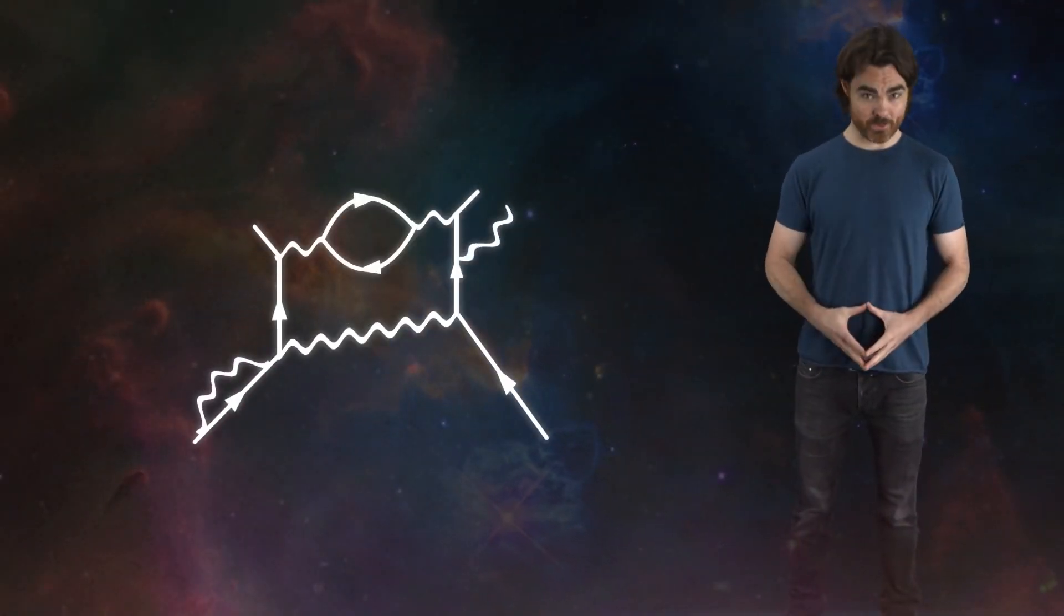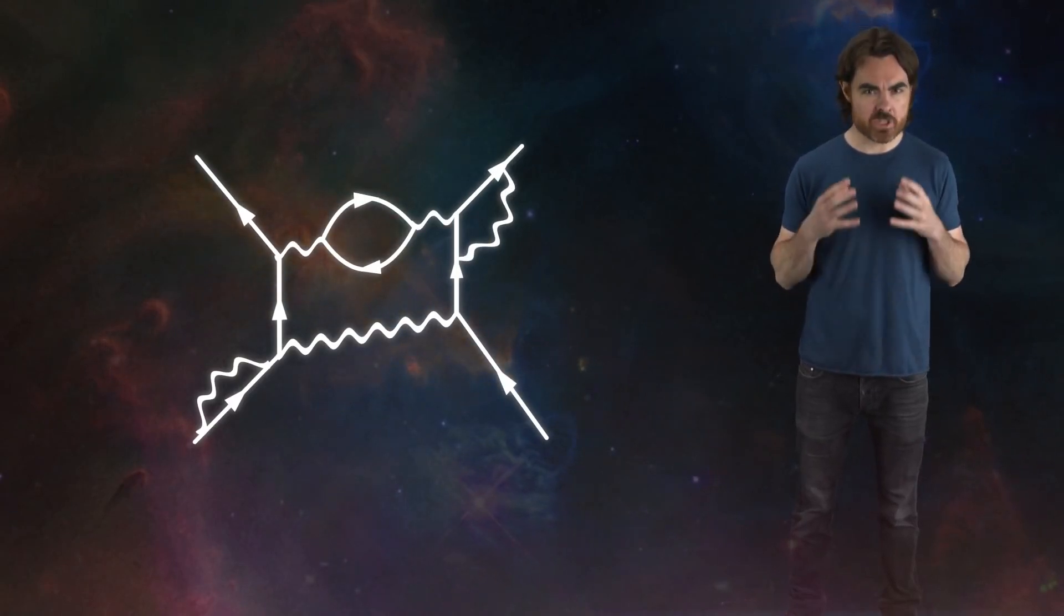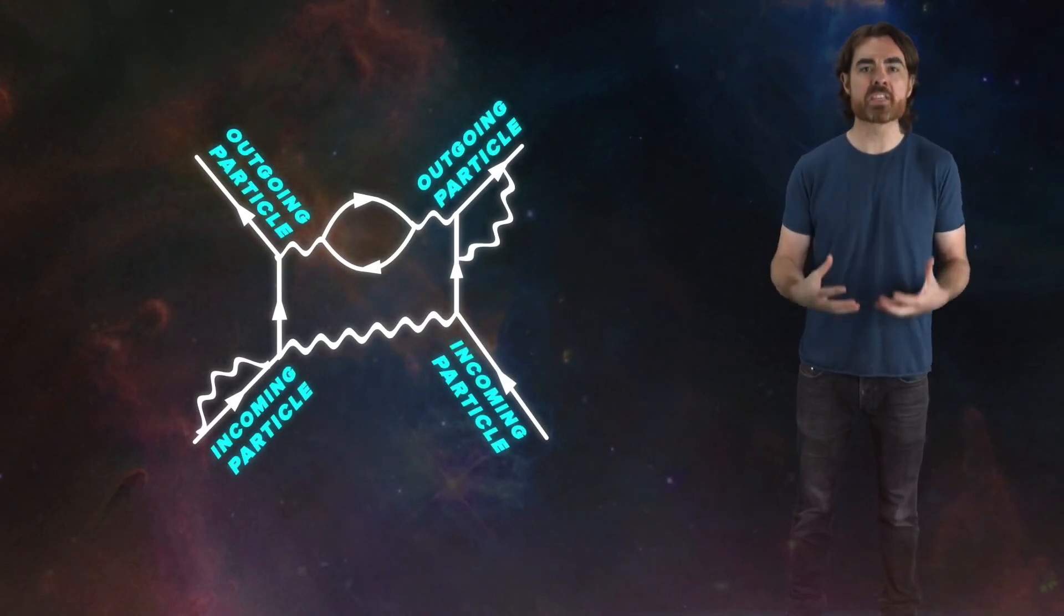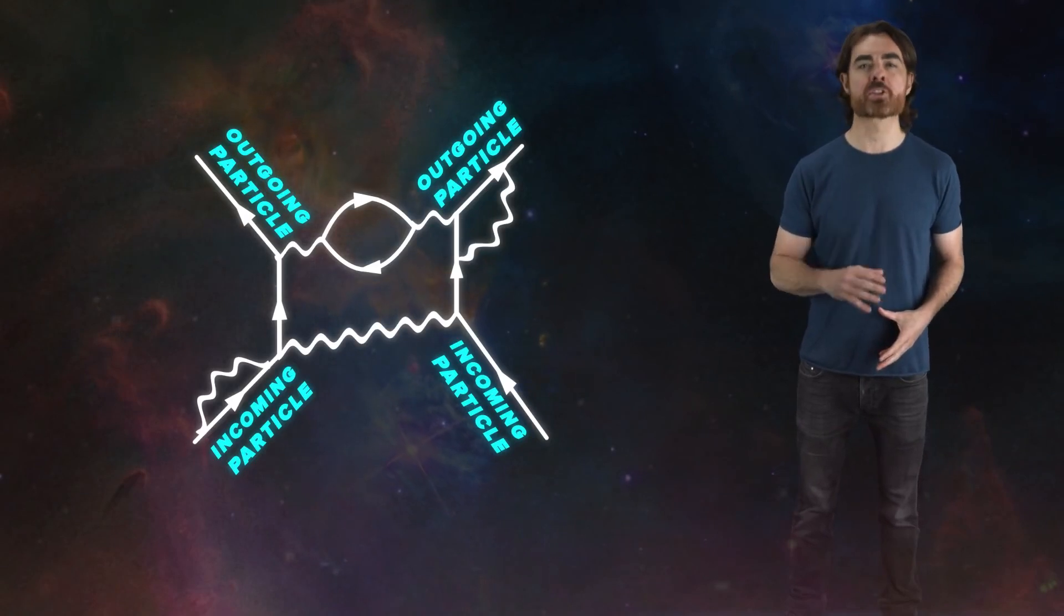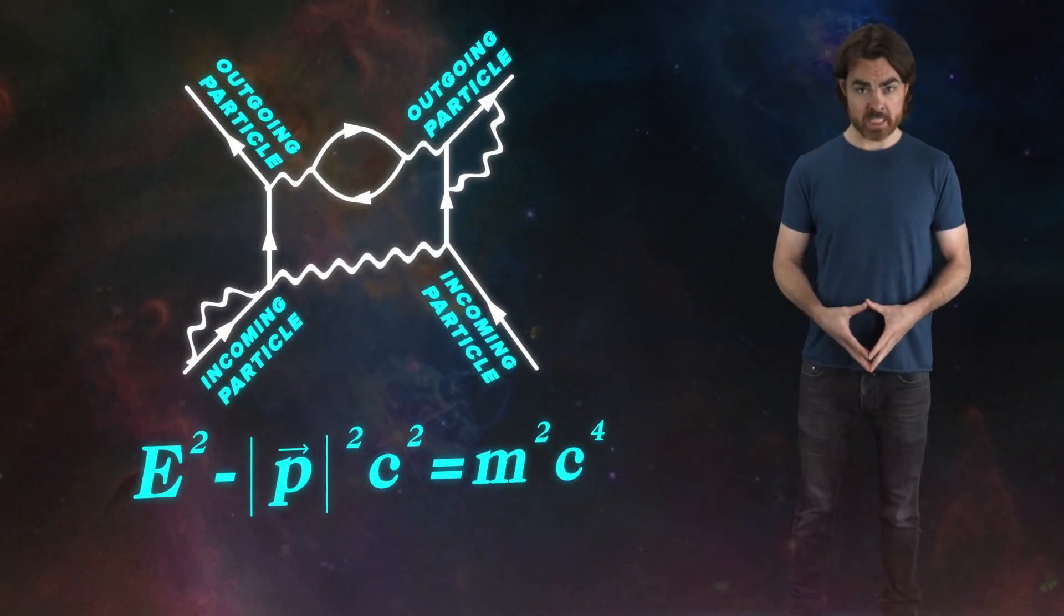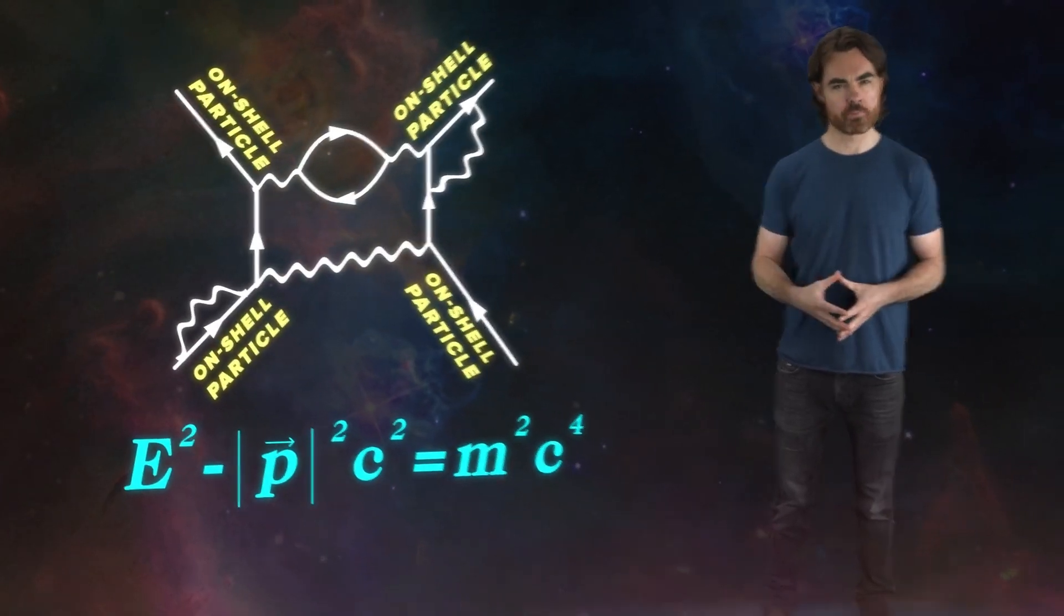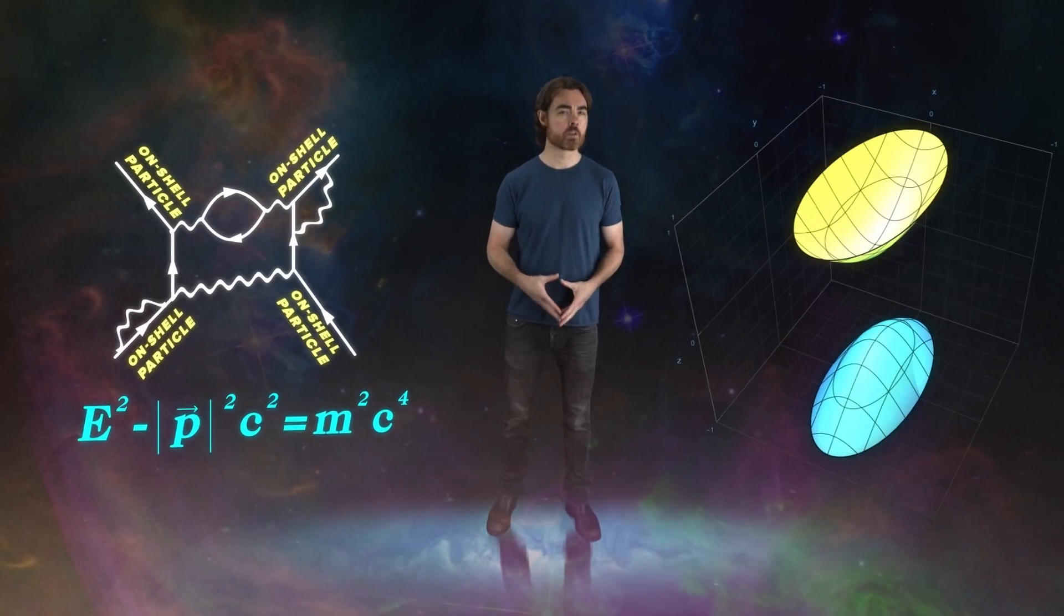Before we look at those more complex interactions, here's another important rule. The overall interaction described by a set of Feynman diagrams is defined by the particles going in and the particles going out. These are the particles that we actually measure. We know their properties, for example, their energy and momentum, and they obey Einstein's mass-energy equation. We say that these particles are on the mass shell, or just on shell. They sit on the shell structure you get when you plot Einstein's equation of energy, momentum, and mass.